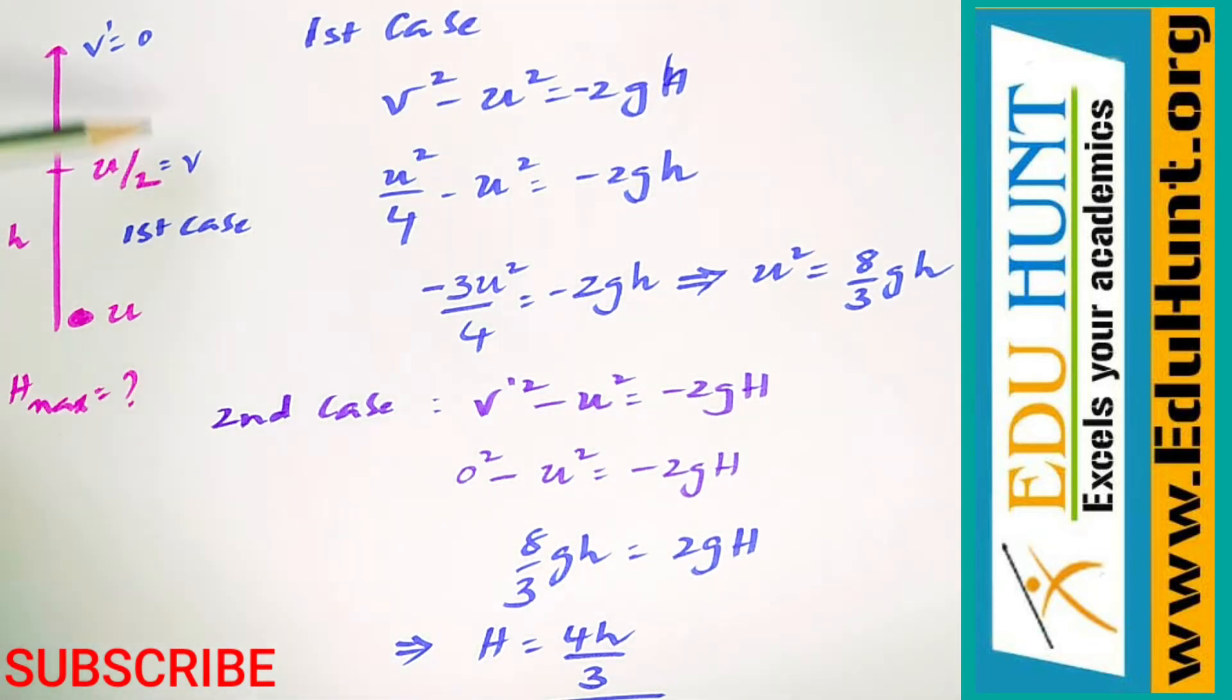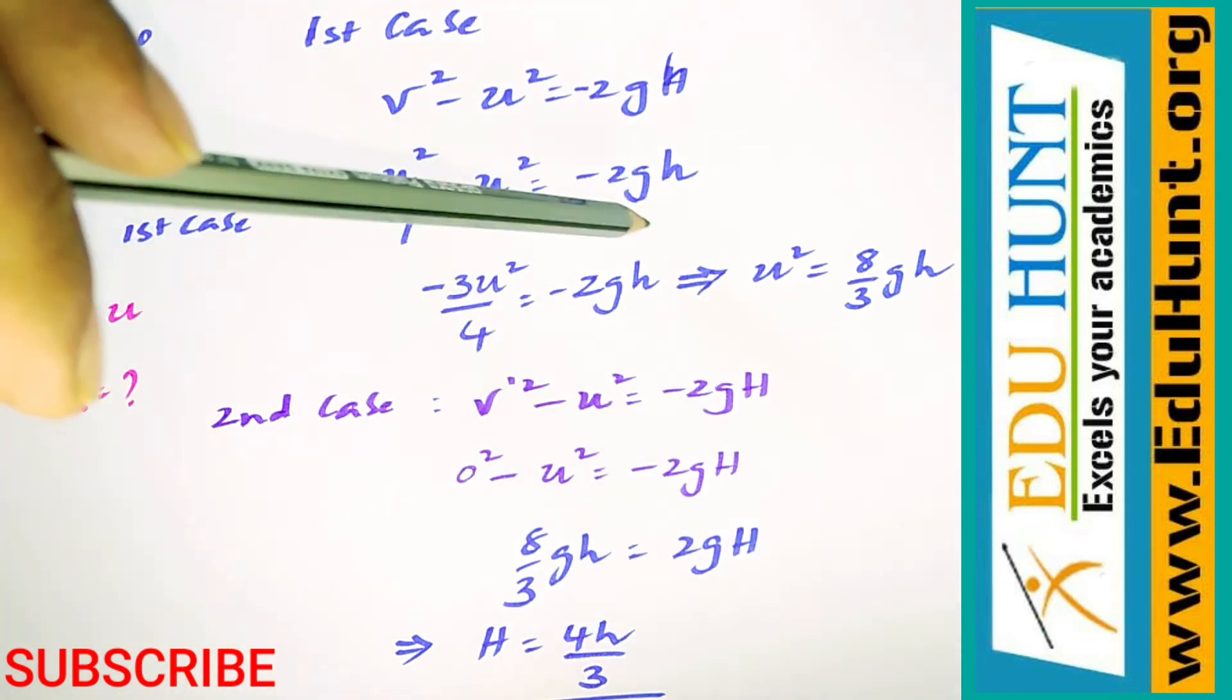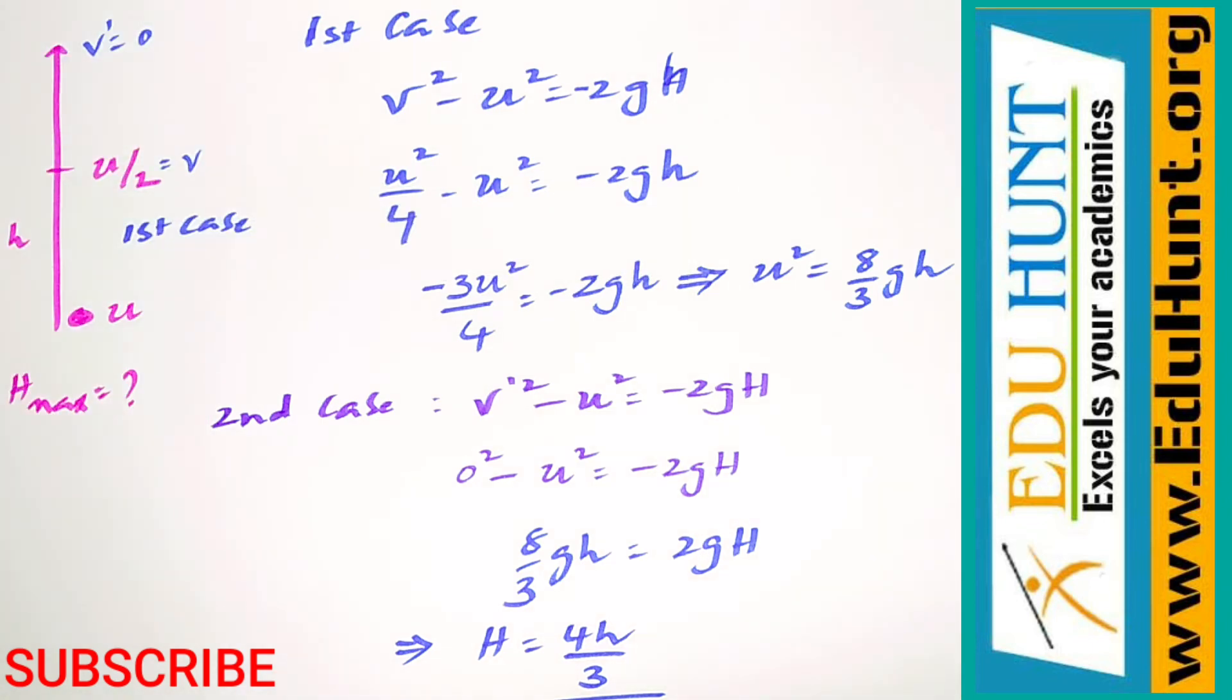v² - u² = 2as. Since it is going upwards, a = -g and s = h. Given that v = u/2, so (u/2)² - u² = -2gh. From this I got u² = 8/3 gh.